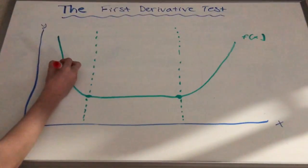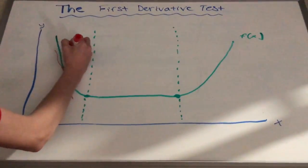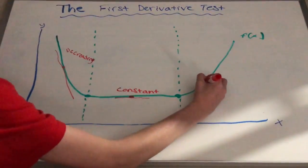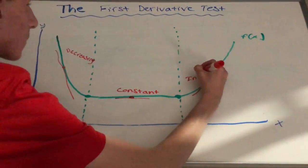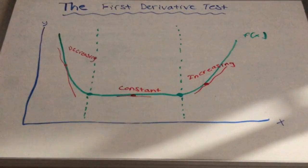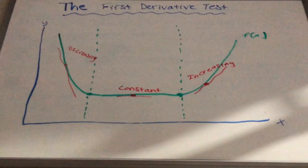Now let's draw a graph to illustrate what increasing, decreasing, and constant looks like. For the first portion, we can see that it has a negative slope, therefore it is decreasing. For the second portion of the graph, it has a constant slope, therefore we can identify it as constant. For the third portion, it has a positive slope, therefore it is increasing.